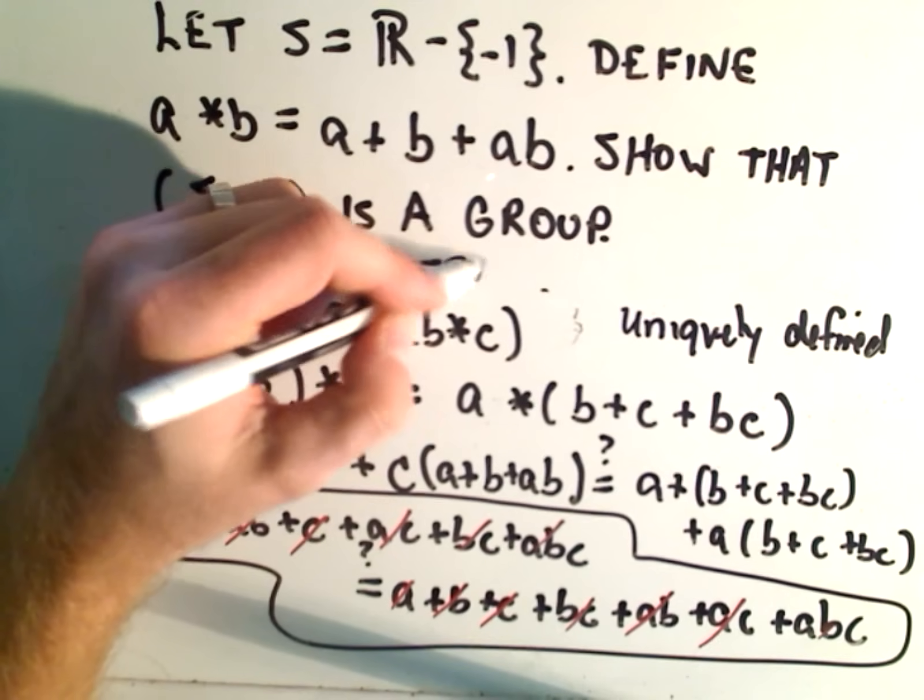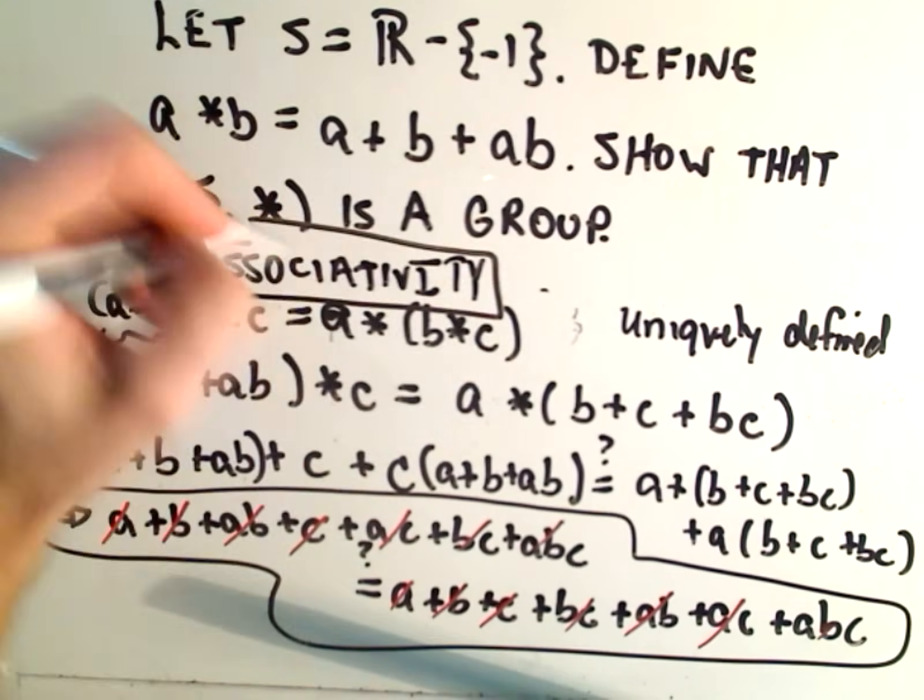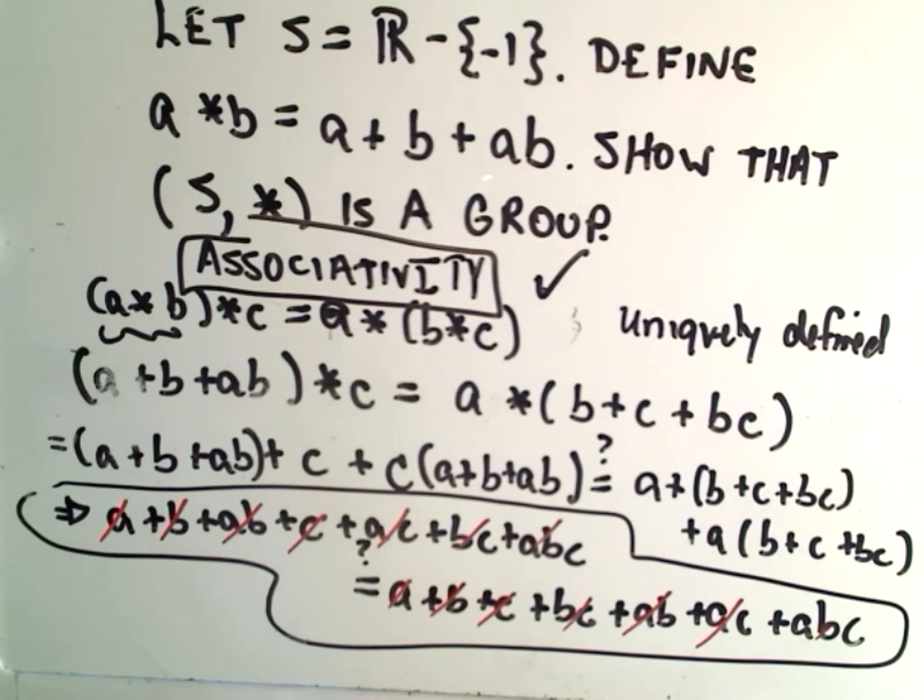I'm going to finish off the other two criteria in another video because I'm going to run out of time. We'll have to show that there's an identity element and that inverses exist. We'll do that in just a second.